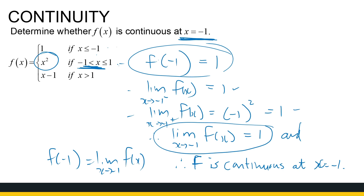When talking about continuity, you must be very specific about where. Here we checked continuity at a specific x value. In the previous examples we looked at polynomials, which are continuous everywhere on their domain, but now we're looking at continuity at a specific x value. We'll look at more examples in the next video.